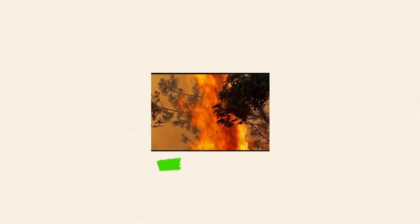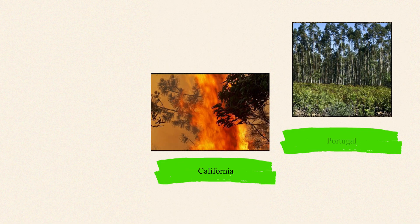So forests made up of eucalyptus trees are really forest-fire prone. On the way here, we can see multiple warnings about fire hazards. In places like Australia where eucalyptus evolved, such fires help propagate the eucalyptus. But in places where eucalyptus has been introduced — like parts of California, Portugal, or southern India along the Western Ghats — eucalyptus is not native.